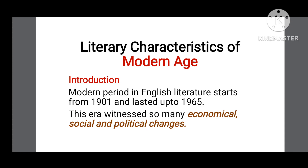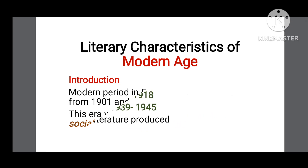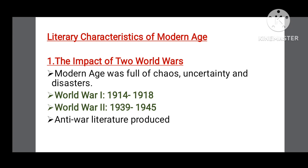This era witnessed so many economical, social, and political changes. During this time, a lot of things happened — two World Wars occurred in this duration: the First World War and the Second World War. Another important event of the modern age is the Great Depression of the 1930s. All these events are reflected in the literature of the modern age. We already made a detailed video on the modern age — if you want to watch it, click the link in the description box.